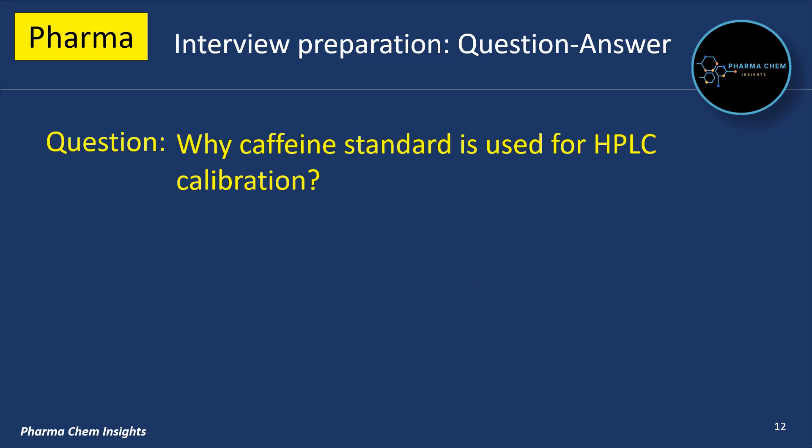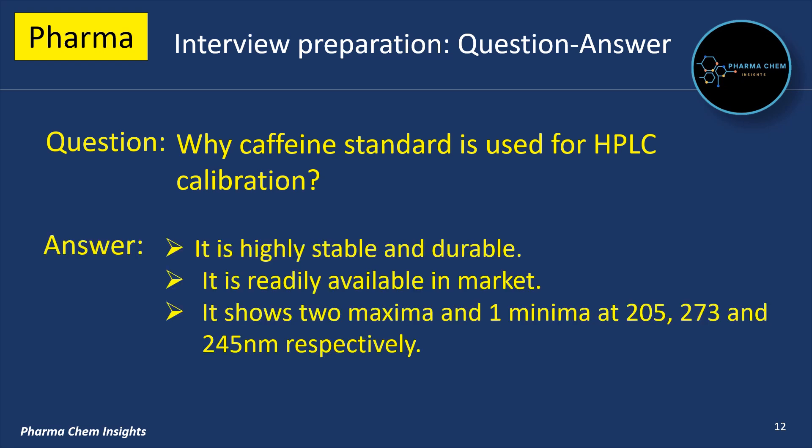Next Question: Why is caffeine standard used for HPLC calibration? Caffeine standard is used because it is highly stable and durable, it is readily available in the market, and it shows 2 maxima and 1 minima at 205, 273 and 245 nanometers respectively.